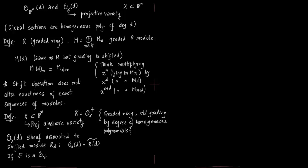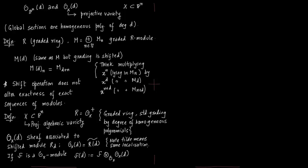If you have a sheaf F which is an O_X-module, you can also define F(D), which is nothing but the tensor product: you take sections F(U) and tensor with O_X(D). The tilde sign means you are able to define sections on open sets — that is, you are able to do some localization. Doing localization is often an application of a tensor product.